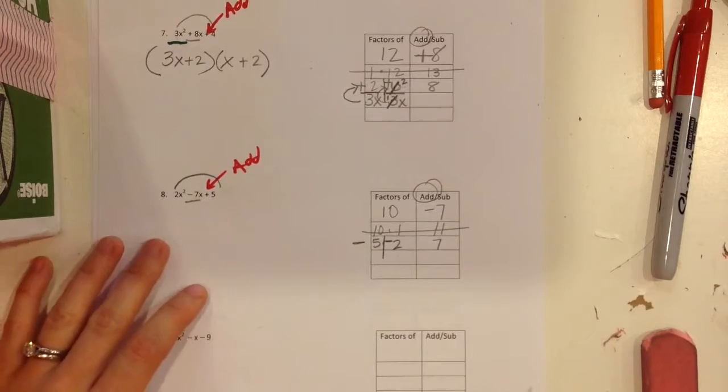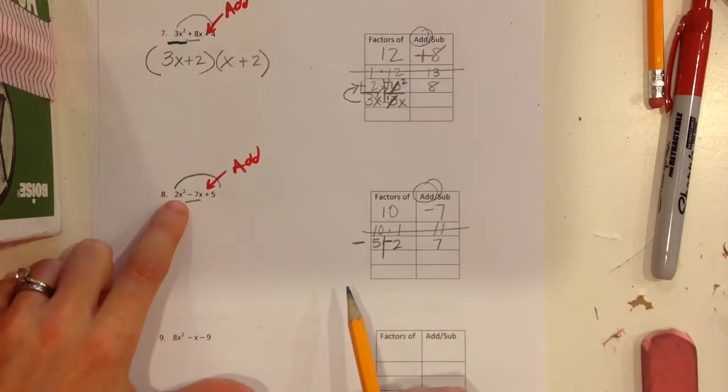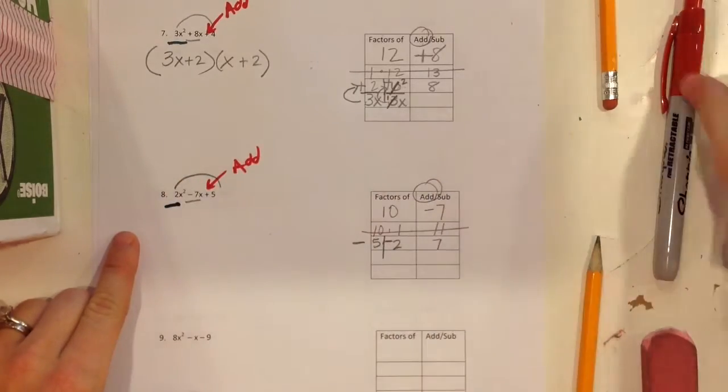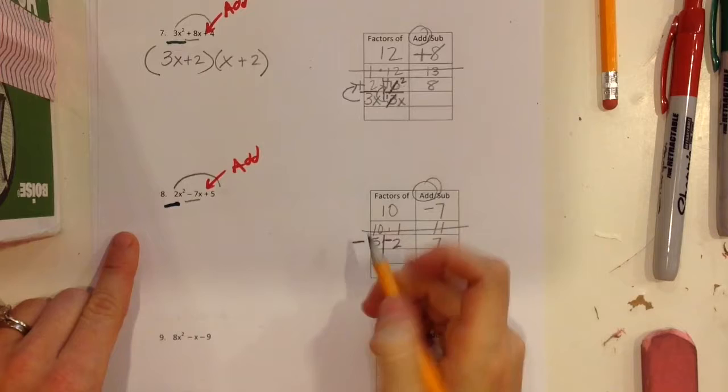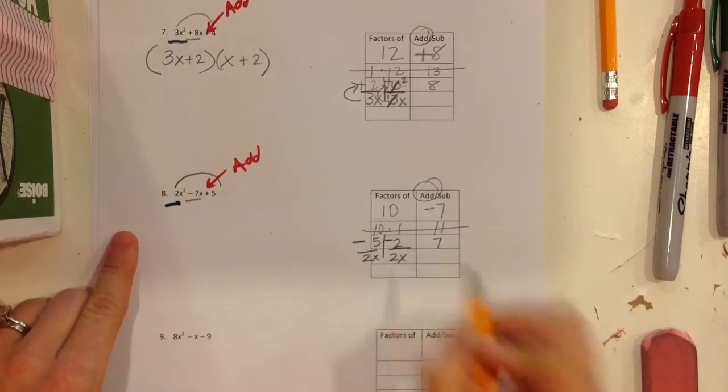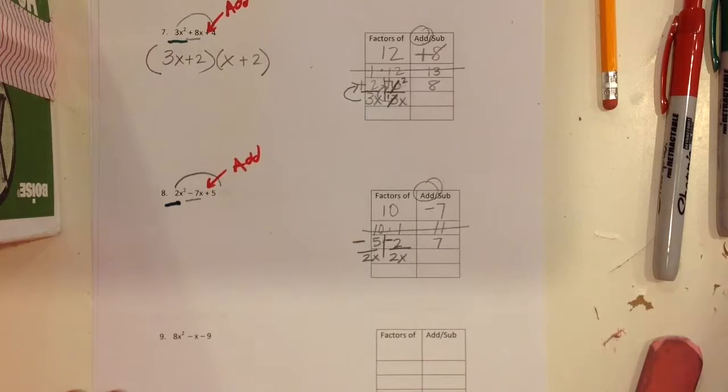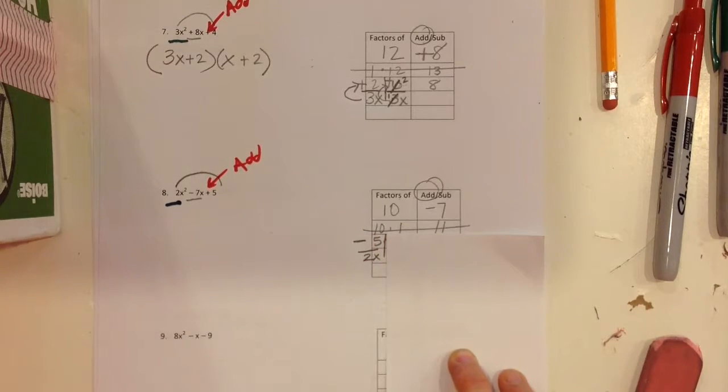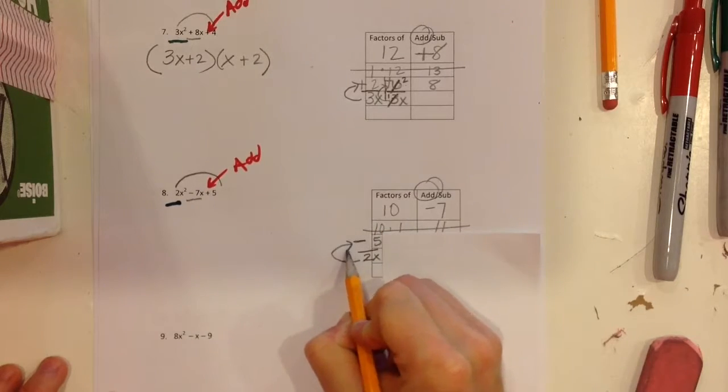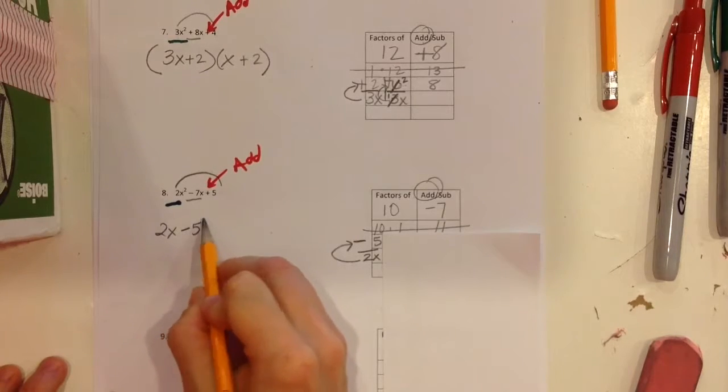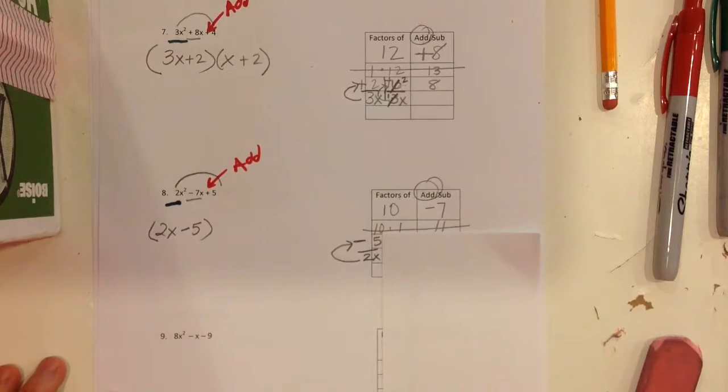Now, when I do my bottoms up step, I'm going to divide by that leading term. The leading term this time is a 2x. So I'm going to divide both of them by 2x. Now again, you want to look at them individually. You want to look at the fraction 5 over 2. Can I reduce the fraction 5 over 2? No. So that means that I'm going to go ahead and bottoms up and get 2x minus 5.